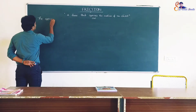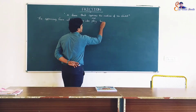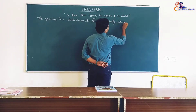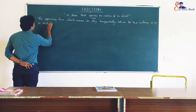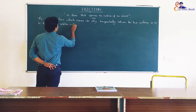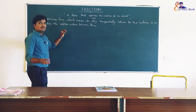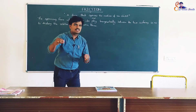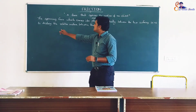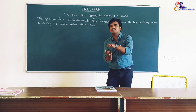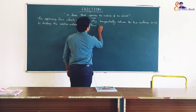Another definition: The opposing force which comes into play tangentially between the two surfaces, so as to destroy the relative motion between them. The opposing force comes tangentially between two surfaces to destroy the relative motion between them — that opposing force is what we call friction.